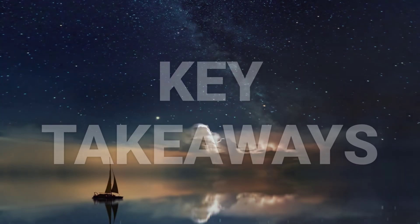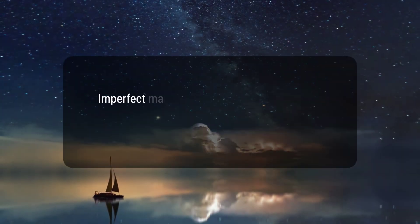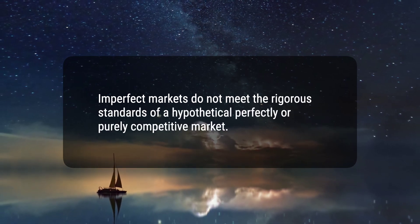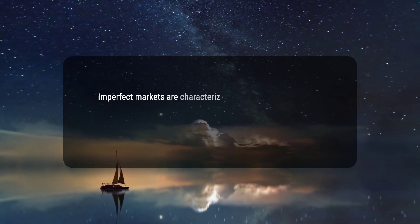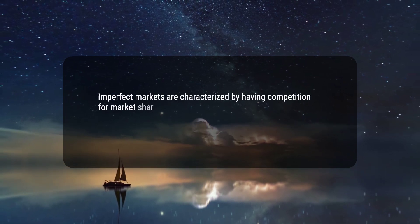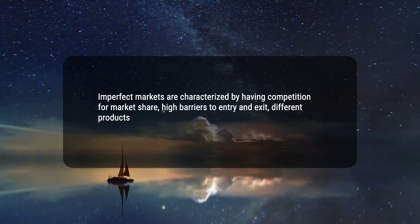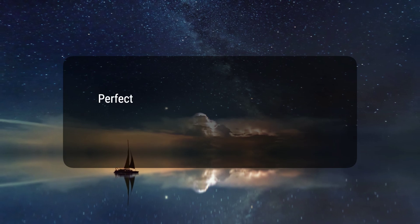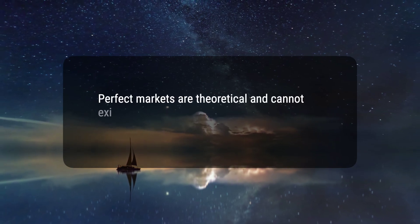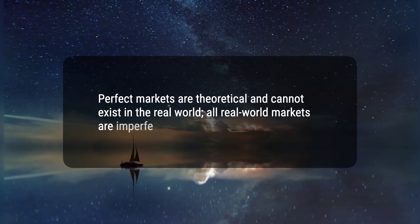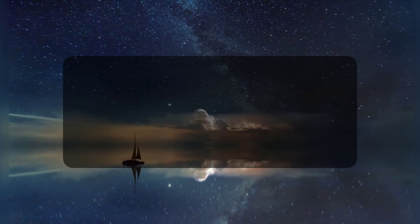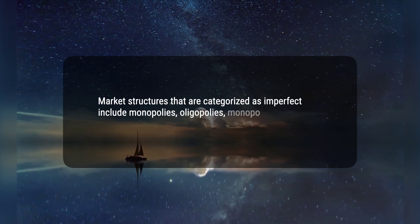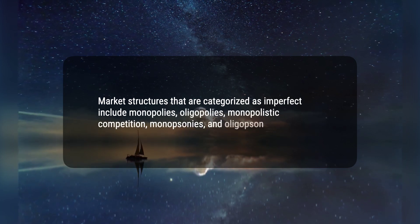Here are four key takeaways. First, imperfect markets do not meet the rigorous standards of a hypothetical perfectly or purely competitive market. Second, imperfect markets are characterized by having competition for market share, high barriers to entry and exit, different products and services, and a small number of buyers and sellers. Third, perfect markets are theoretical and cannot exist in the real world — all real-world markets are imperfect markets. Fourth, market structures that are categorized as imperfect include monopolies, oligopolies, monopolistic competition, monopsonies, and oligopsonies.